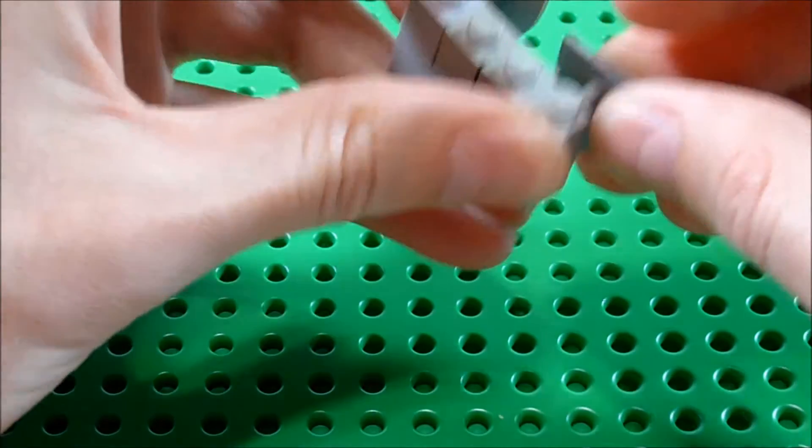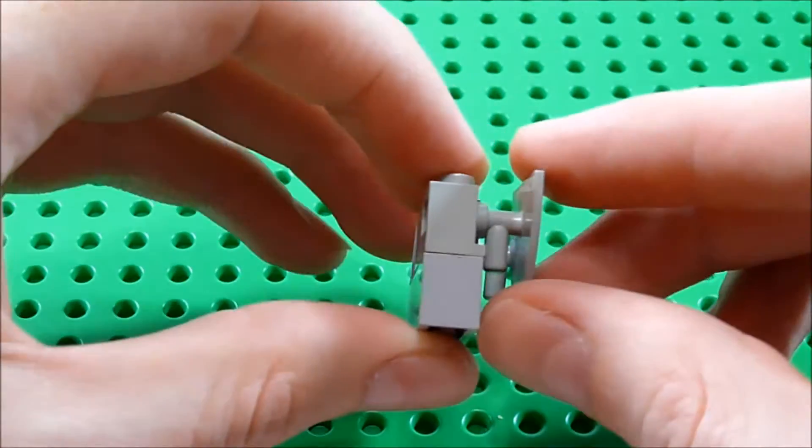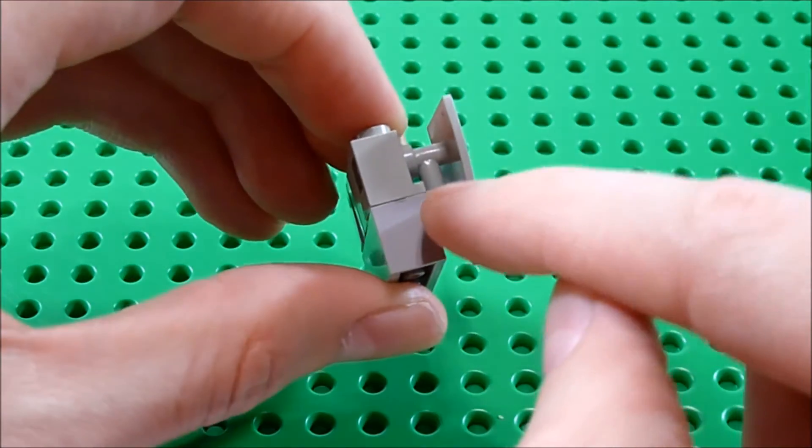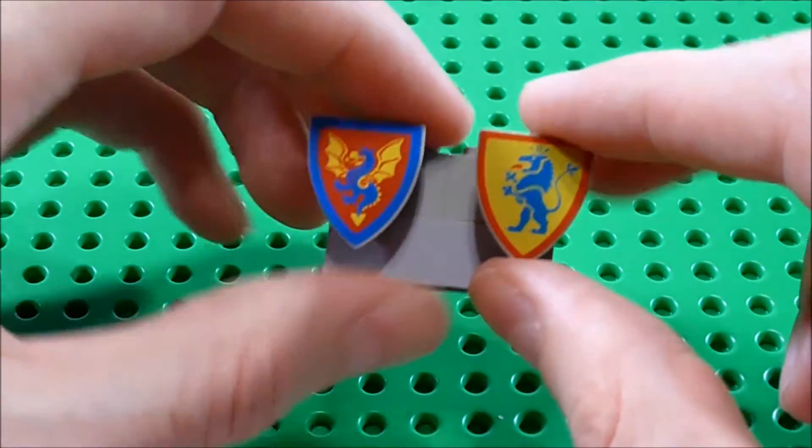The problem with this approach is that you can only get so far in and this handle piece blocks the shield going flush against the wall.